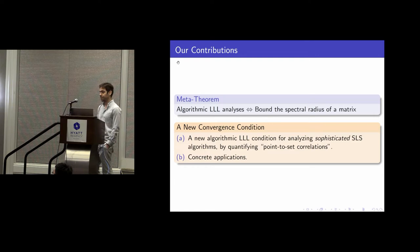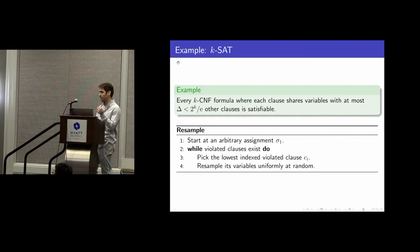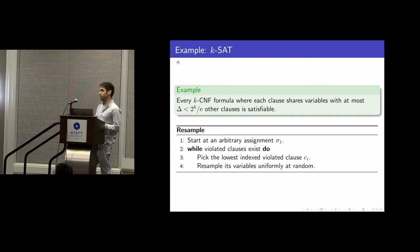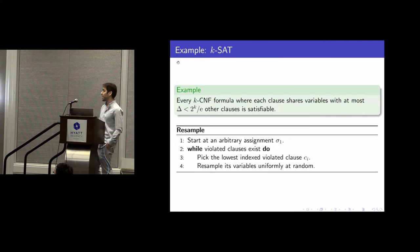In order to explain the idea about the spectral radius and the matrix, I'll focus on the simplest example possible: how the Moser-Tardos algorithm applies to K-CNF formulas. If you apply the local lemma with a uniform distribution when your input is a K-CNF formula, you get the statement that if each clause shares variables with at most 2^K over e other clauses, then a solution exists and this Moser-Tardos algorithm finds a solution.